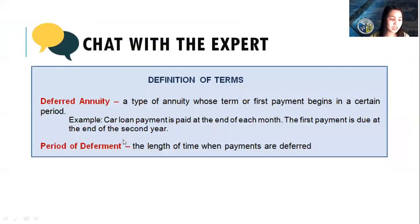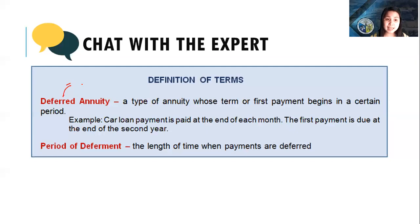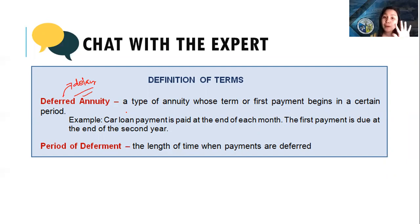This morning we'll be talking about deferred annuity. When we say deferred annuity, we associate it with the key term 'delay.' In deferred annuity, the first payment is being delayed. For example, you went to Yamaha to loan a motorcycle payable for five years; however, you started paying in the second year. That one-year delay makes it a deferred annuity.